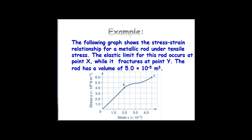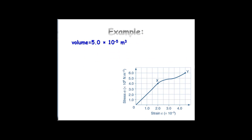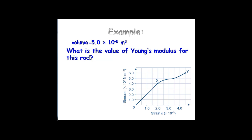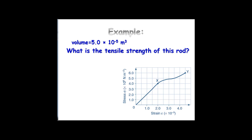Let's look at an example. We have a stress-strain relationship for a metallic rod. It fractures at point Y, the elastic limit is at point X, and we're given the volume. What's the value of Young's modulus for this rod? Young's modulus is calculated by the gradient: rise over run gives us 2 times 10 to the 8 divided by the appropriate strain interval, giving a Young's modulus of 2 times 10 to the 11 newtons per metre squared. The tensile strength — the maximum stress before failure — occurs at about 6 times 10 to the 8 newtons per metre squared.